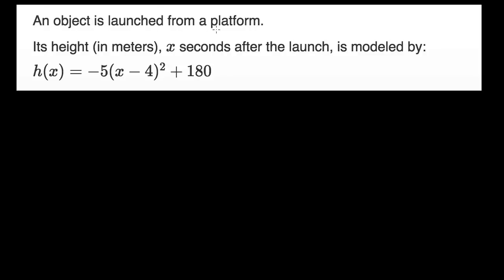An object is launched from a platform. Its height in meters, x seconds after the launch, is modeled by h(x) equals negative five times x minus four squared plus 180. Normally when they talk about seconds or time, they usually would use the variable t, but we can roll with x being that.